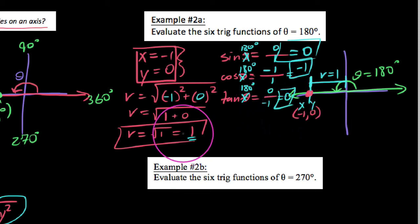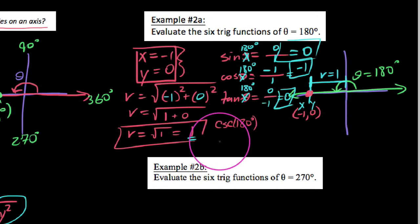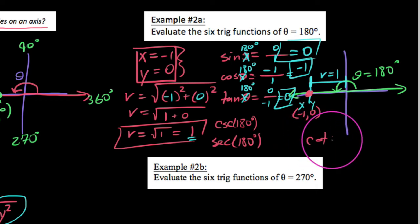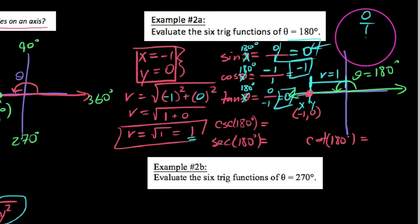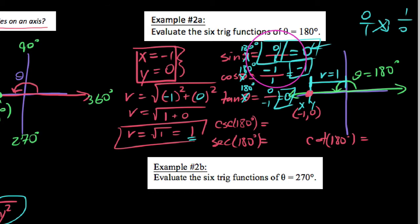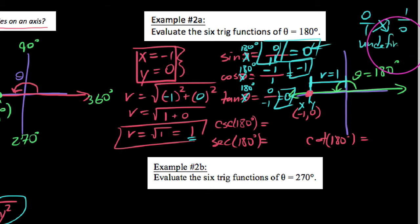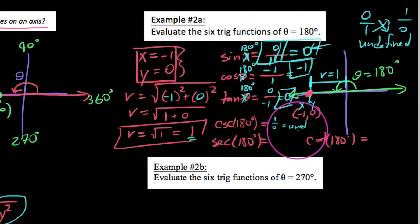Now we find the reciprocals: cosecant, secant, and cotangent of 180 degrees. All we need to do is flip over our original three ratios. This is important because we need to ask: what is the reciprocal of zero? If we flip zero over one, we get one over zero, which is undefined. It's possible for a trig ratio to be undefined, and it's more common than you'd think.